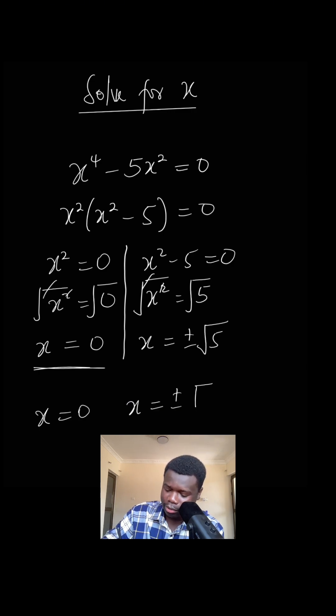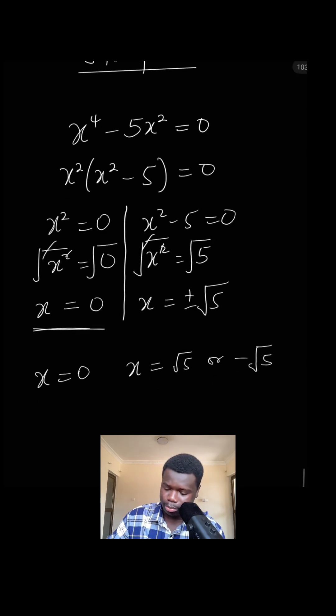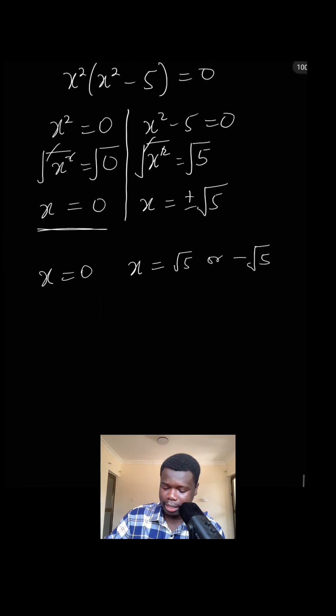So x = ±√5, which is the same as √5 or -√5. If you have to write it in the proper format, the values for x will be: x = 0, √5, and -√5.